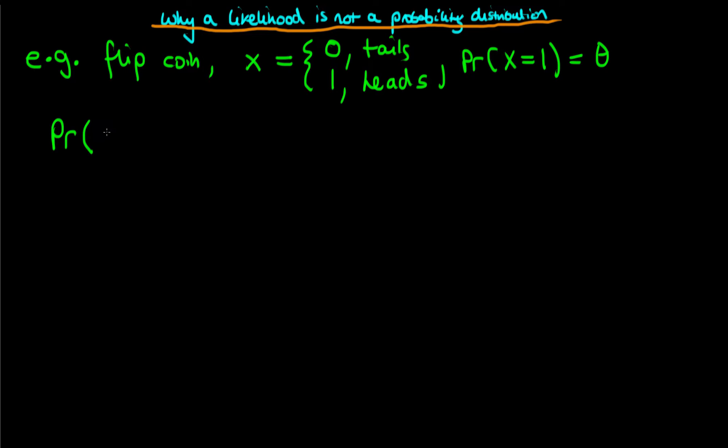We can use this simple setup to write down the probability of obtaining each of the possible outcomes. So the probability that we obtain tails, given a probability of heads theta, is simply equal to one minus theta. The probability that x equals one, given our probability of heads theta, is equal to theta. And when we sum these two things together, we obtain one. And hence, we do have a valid probability distribution.